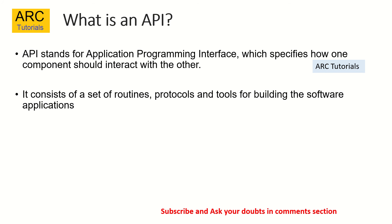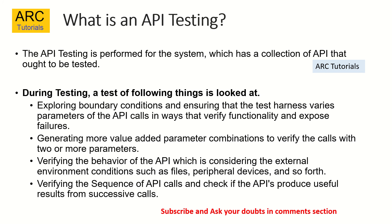Most modern applications are based on JSON output. API testing is performed for a system which has a collection of APIs that are to be tested. During testing, the following things are looked at: exploring the boundary conditions and ensuring the test harness varies parameters of the API calls to verify functionality and expose failures. You would try and push data to different conditions — the happy path and the negative path. You will pass data where you expect the API to succeed, and also data where you expect it to fail.